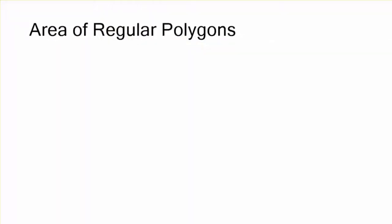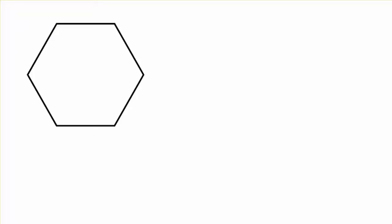This is just a brief video on how we get the area of a regular polygon and that formula, A equals one-half ap. What does it actually mean?